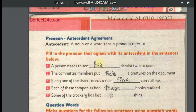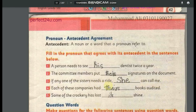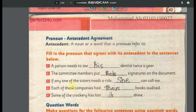More examples of pronoun-antecedent agreement: 'The committee members put their signatures on the document.' — members is plural, so 'their' is used. 'If anyone of the sisters needs a ride, she can...' — 'anyone' is singular, so 'she'. 'Each of these companies...' — 'each' is singular. 'Some of the crockery has lost its shine.' — 'crockery' is a non-living thing, so 'its'. The pronoun must always match its antecedent.